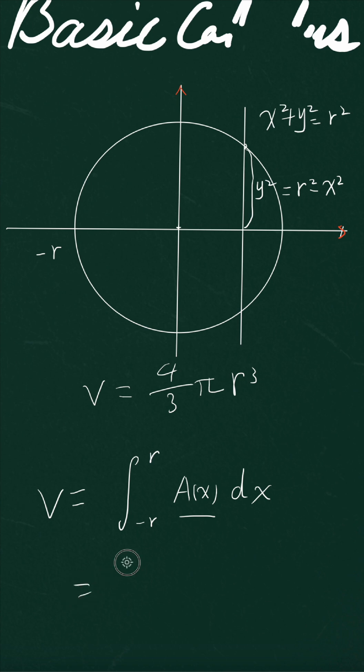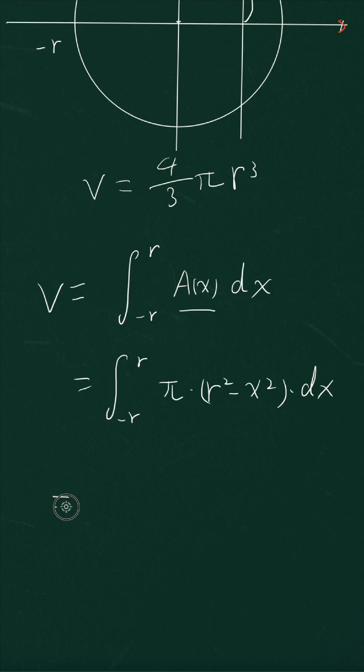So this is the integral from negative r to r of pi times (r squared minus x squared). We can factor pi out, and then the inside is r squared times x minus one over three x to the power of three.